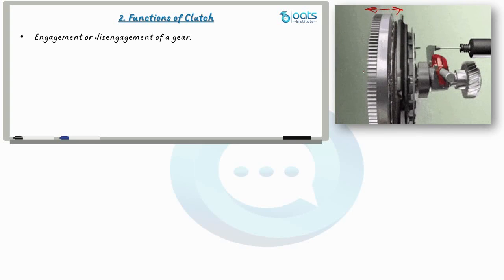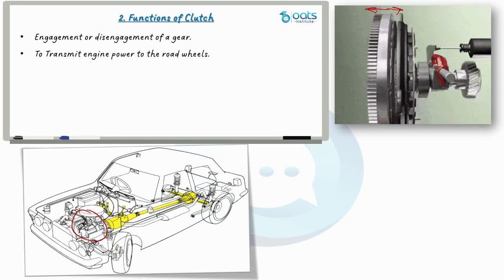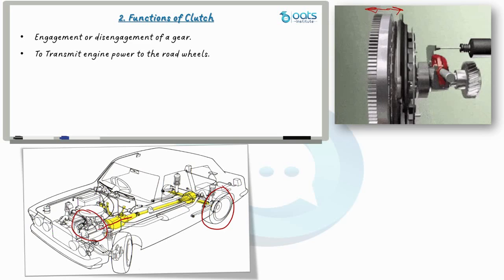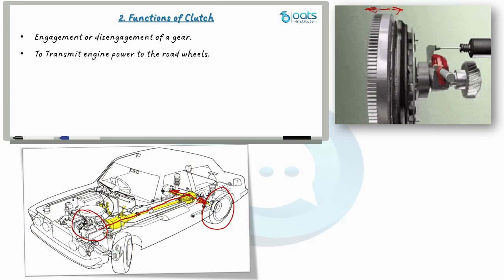Second, it serves as a bridge between the engine and the road wheels, transmitting engine power smoothly to set the vehicle in motion. The clutch ensures a seamless transfer of power, eliminating any jerks or disruption in the transmission system.